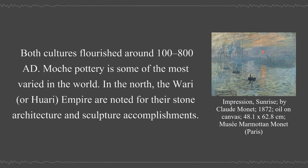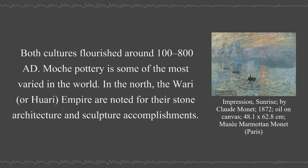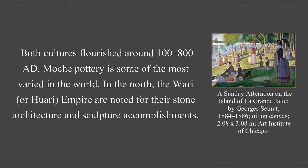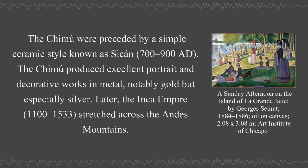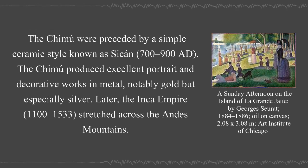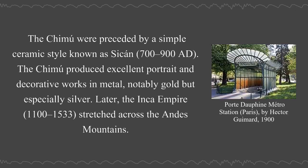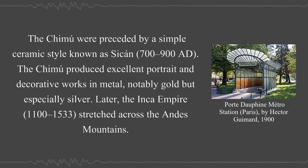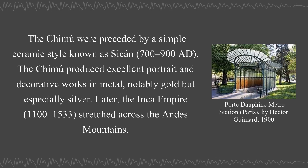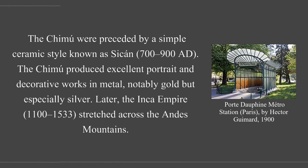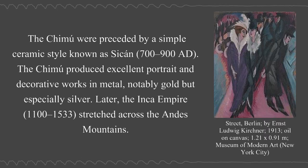Both cultures flourished around 100–800 AD. Moche pottery is some of the most varied in the world. In the north, the Wari or Huari empire are noted for their stone architecture and sculpture accomplishments. The Chimu were preceded by a simple ceramic style known as Sican, 700–900 AD. The Chimu produced excellent portrait and decorative works in metal, notably gold but especially silver.